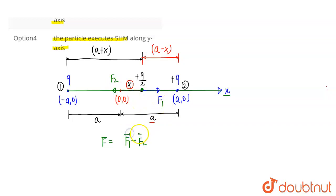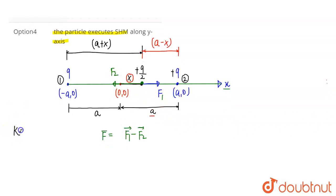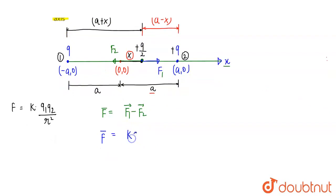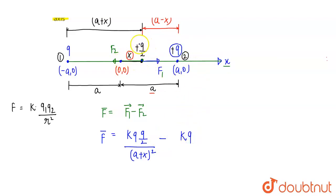The net force on the Q/2 charge will be F1 minus F2, since they act in opposite directions and F1 is greater than F2. Using Coulomb's law, F = KQ₁Q₂/r², we write: F1 = KQ(Q/2)/(A+X)² and F2 = KQ(Q/2)/(A−X)². So the net force equals KQ(Q/2) multiplied by [1/(A+X)² minus 1/(A−X)²].